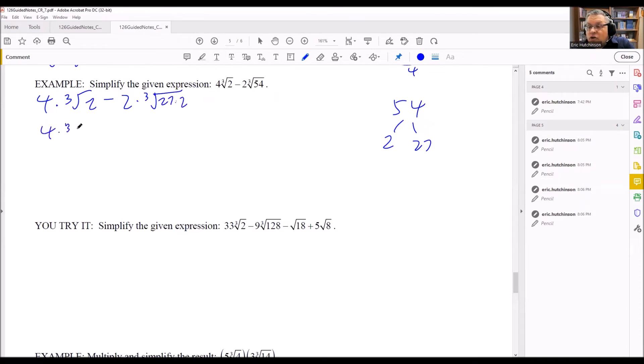So I have 4 times cube root of 2 there. And then this I'm going to break apart. I'm going to do cube root of 27 times the cube root of 2. The cube root of 27 is 3. So I get 2 times 3 times the cube root of 2. But 2 times 3, we can now multiply that. We get minus 6 cube root of 2.